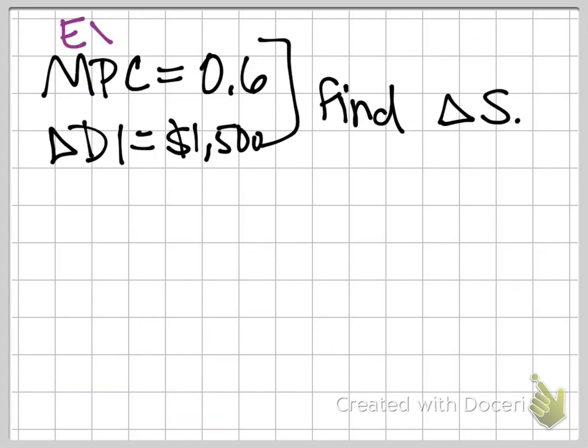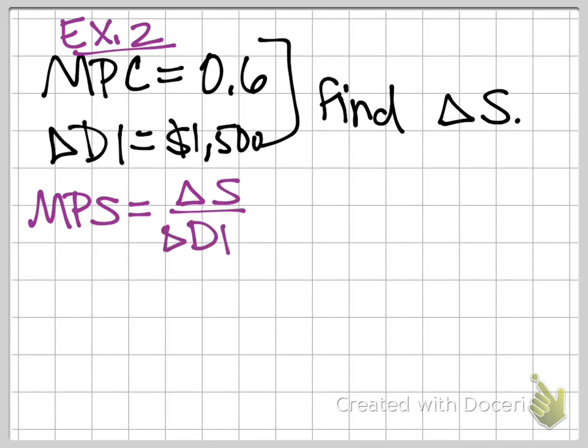Here's the second example that we're going to work. This one's a little bit more complicated. You're told that your MPC is 0.6 and disposable income increases by $1,500, and you're asked to find the change in savings. Again, there's more than one way to work this. But for me, I'm going to start by figuring out what my MPS would be, because I know my MPS is my change in savings, what I'm trying to find, over my change in disposable income, which I know is this $1,500 here.